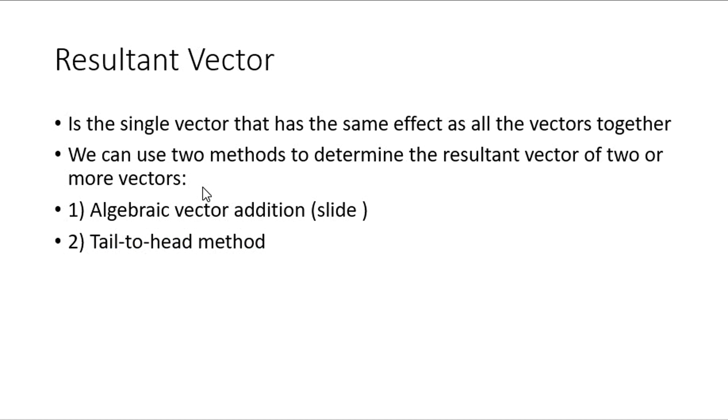All right, now there's two ways to work out a resultant vector. The resultant vector is the single vector that has the same effect as all the vectors together. That's why we add them all together. We can use two methods: algebraic vector addition, which is on the slides, or the tail-to-head method.